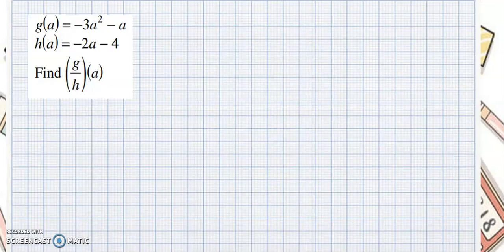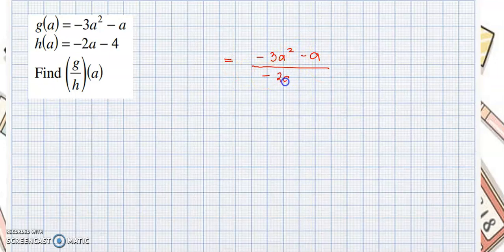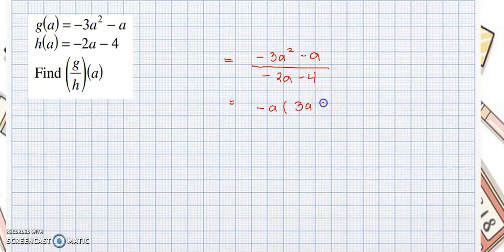Let's have an example. On your first example, your numerator here would be g of a since we need to find g over h of a. So we put negative 3a squared minus a on the numerator, and on the denominator it would be negative 2a minus 4. In here, we can factor out common factors. So this would be negative a outside the common factors of negative 3a squared and negative a, including the sign. Then inside, what remained would be negative 3a squared divided by negative a, that's positive 3a. Since we effectively factored out the negative sign, this would be plus 1 instead. On the denominator, we can factor out negative 2, so what remains inside would be a plus 2.